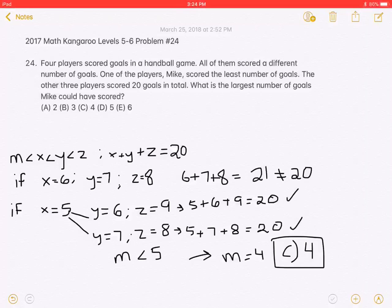Let's try X is equal to 5. The two possible solutions are X equals 5, Y equals 6, and Z equals 9, with a sum of 20.